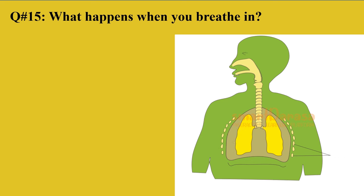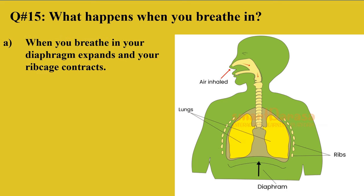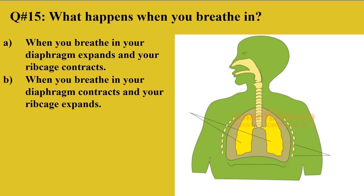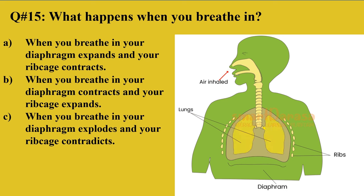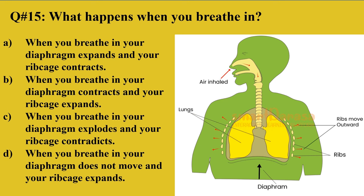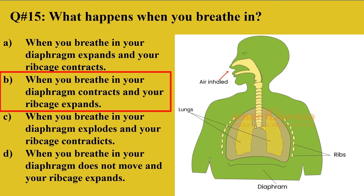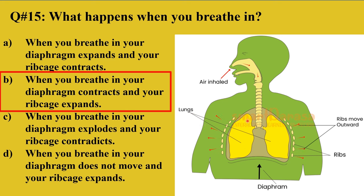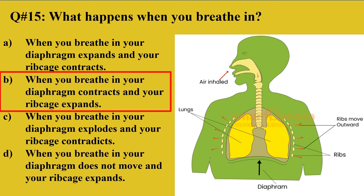Question 15: What happens when you breathe in air? A: Diaphragm expands and ribcage contracts. B: Diaphragm contracts and ribcage expands. C: Diaphragm explodes and ribcage contracts. D: Diaphragm does not move and ribcage expands. The right option is B. When you breathe in, the diaphragm contracts to increase volume for air, the ribcage expands and moves outward, and the diaphragm moves downward, creating space to accommodate the air.